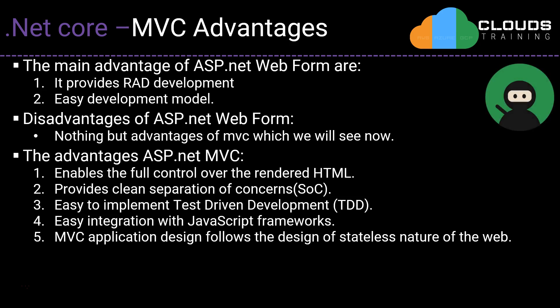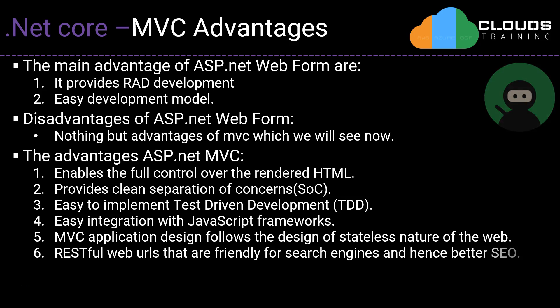For example, a client sends a request to the server and the server processes the request and sends the response back to the client. Nowadays, cloud technologies are rapidly emerging and if you want to leverage the features of autoscaling, this is the best approach. MVC application URLs are search engine friendly, providing better SEO.